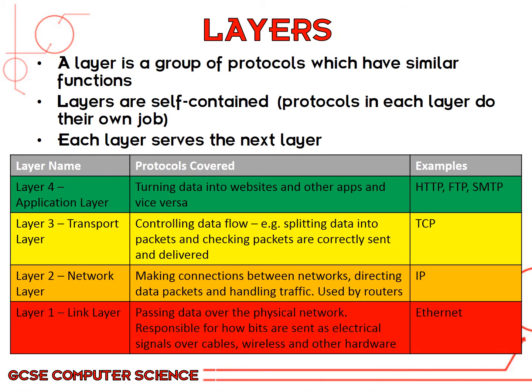The TCP/IP protocol has layers. A layer is a group of protocols which has similar functions. Each layer is self-contained — it does its own job — and each layer serves the next layer, passing on to the next once its job is complete. With the TCP/IP stack of four layers, we start at the top on the application layer. This is where the user is likely to interact — it turns data into websites and other applications and vice versa. For example, if you're accessing a website, the application layer will be the browser, reading the website using the HTTP protocol.